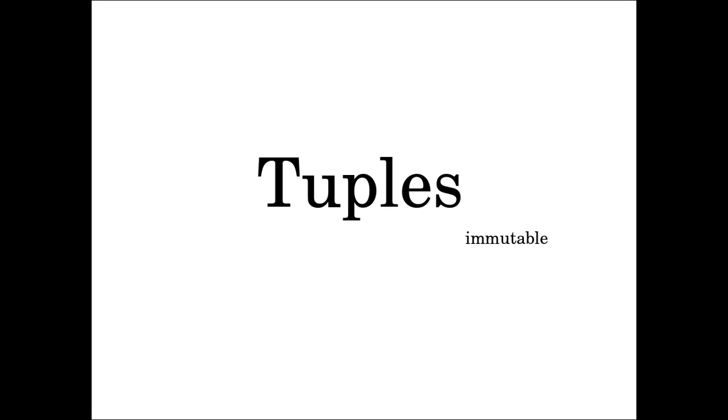Today we will look at tuples in Python. Our last topic was about lists. The small difference between a list and a tuple is that in a list you can add or delete items by accessing the index. But a tuple is immutable, which means you create the tuple with certain items and those items cannot be changed at all — you cannot add any item or delete any item from a tuple.